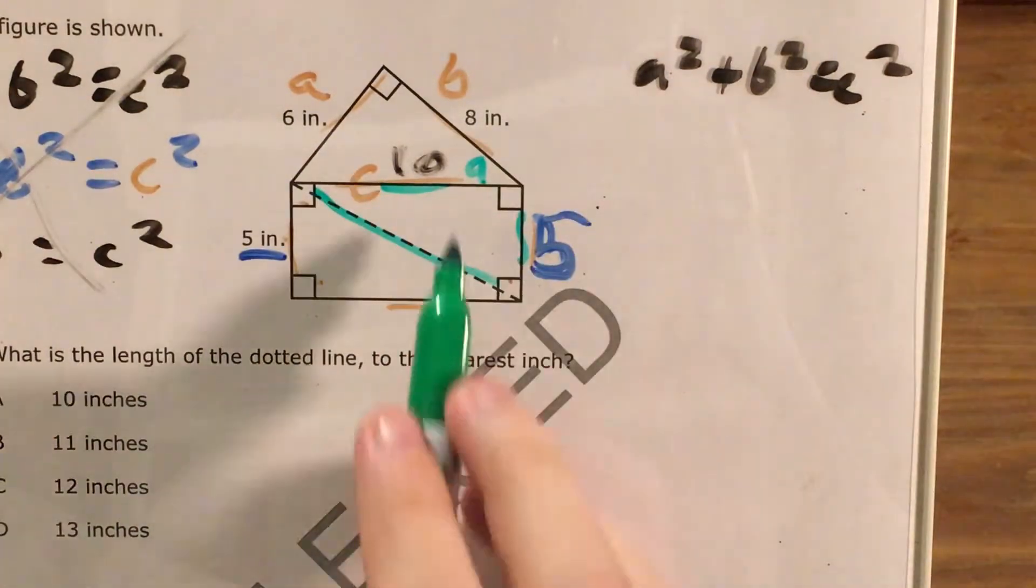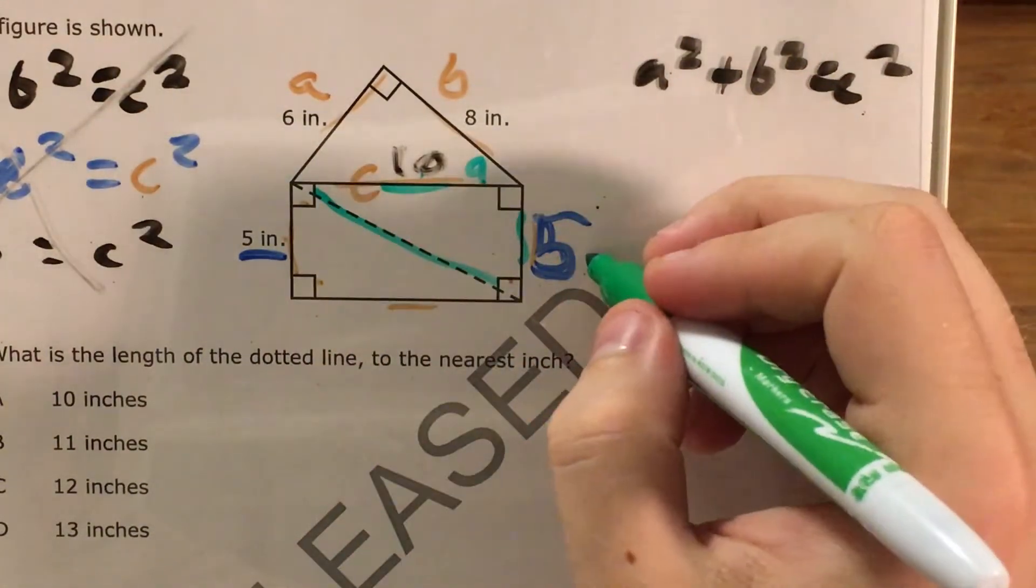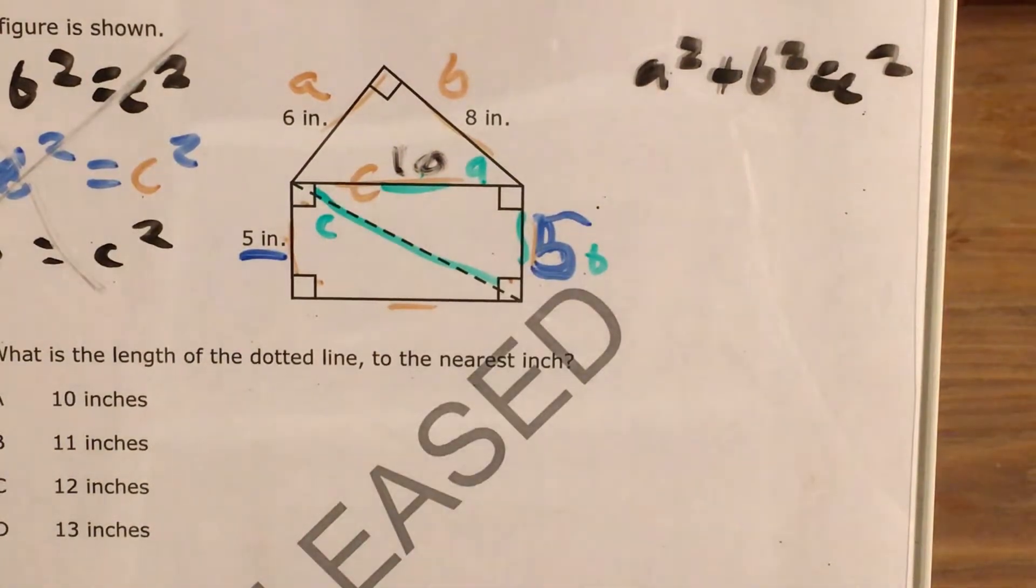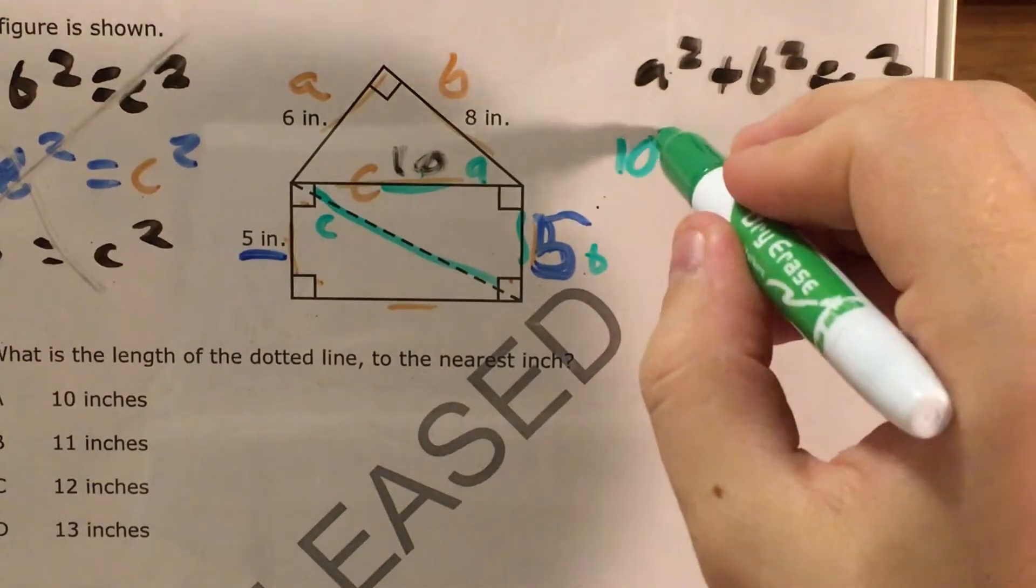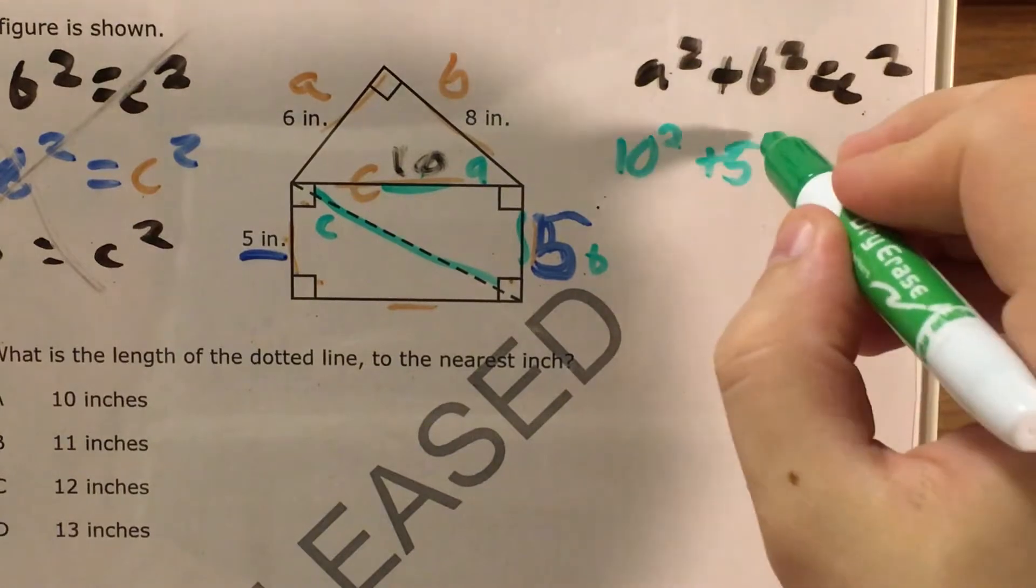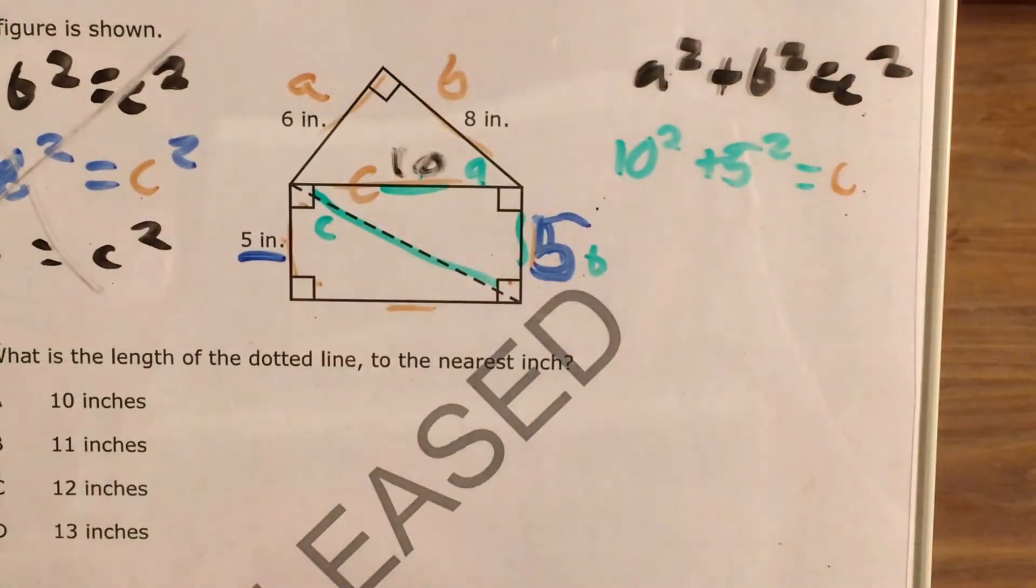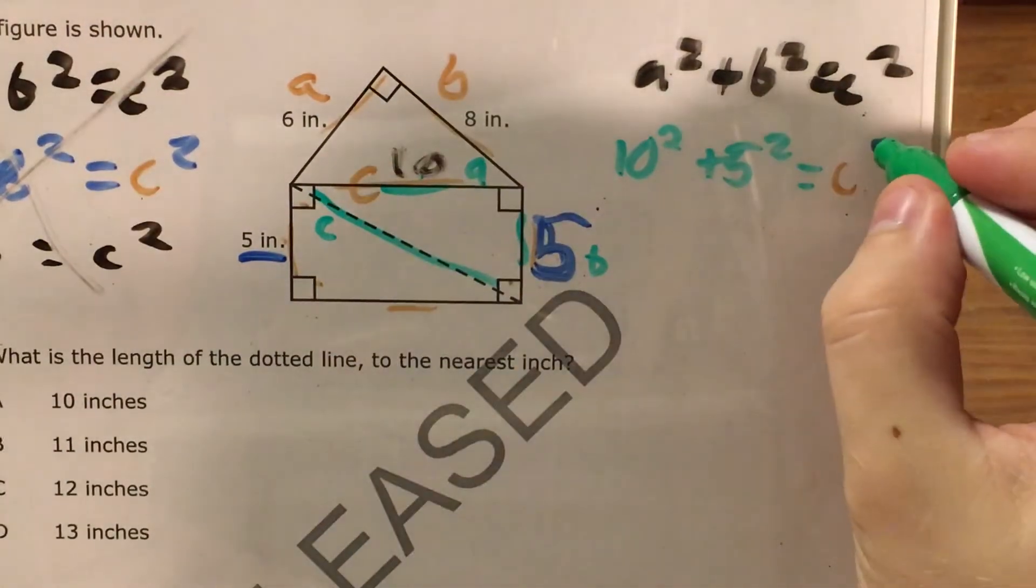So now, for this triangle that I've outlined in green, 10 is A, 5 is B, and C is this hypotenuse that I'm trying to find. So this becomes 10 squared plus 5 squared equals, and I still don't know what C is, so I'll call this C squared.